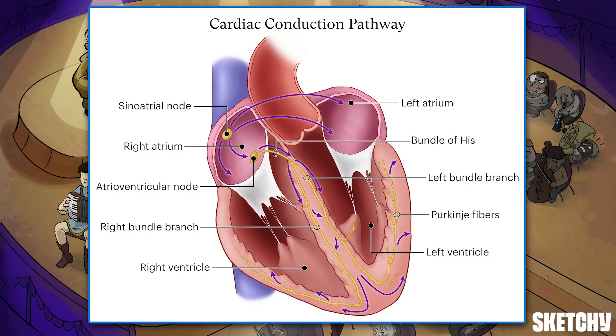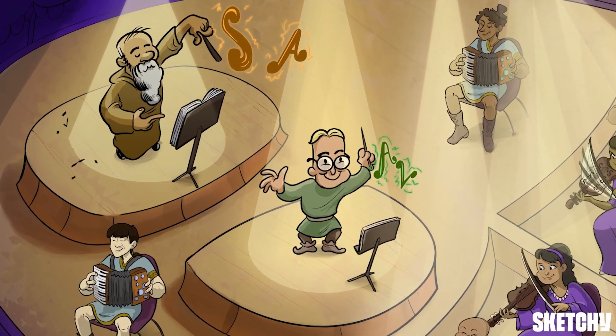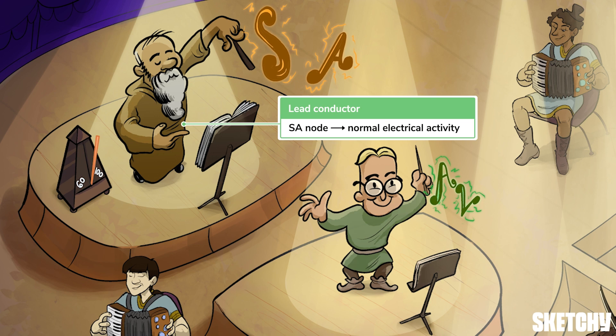Our electrified stage is starting to look pretty familiar, don't you think? Much like our maestro here masterfully conducts his orchestra, the SA node masterfully sets the stage for normal cardiac electrical activity with every action potential it fires, which brings us to a very important concept: normal sinus rhythm, or NSR.